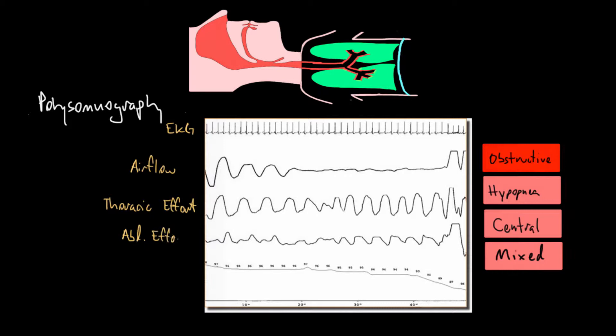Together, thoracic and abdominal effort can give us an idea of what the diaphragm is actually doing without measuring directly if it's contracting. This last line here is the SAO2, or oxygen saturation. You can see it has these little numbers - 96, 94, 97 - that just track over time the oxygen saturation of the patient's blood.